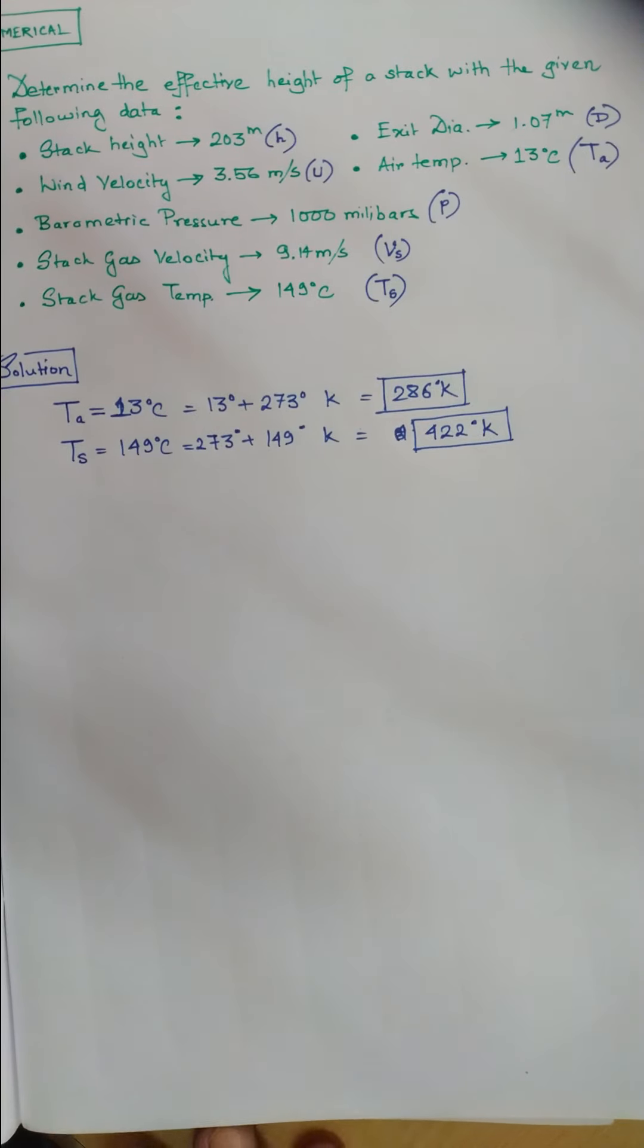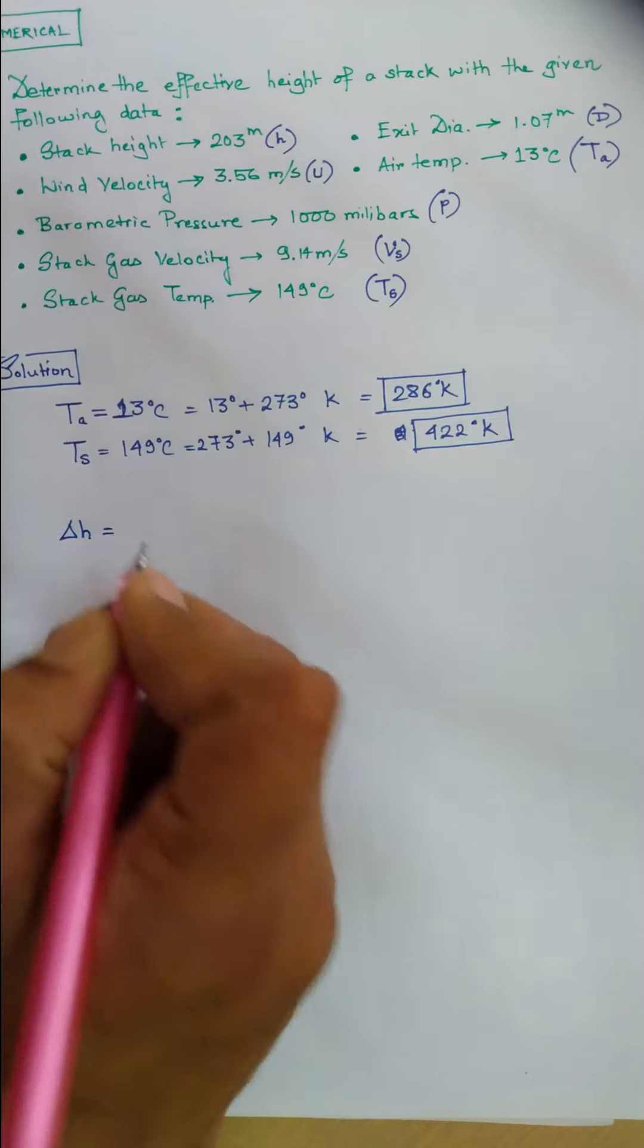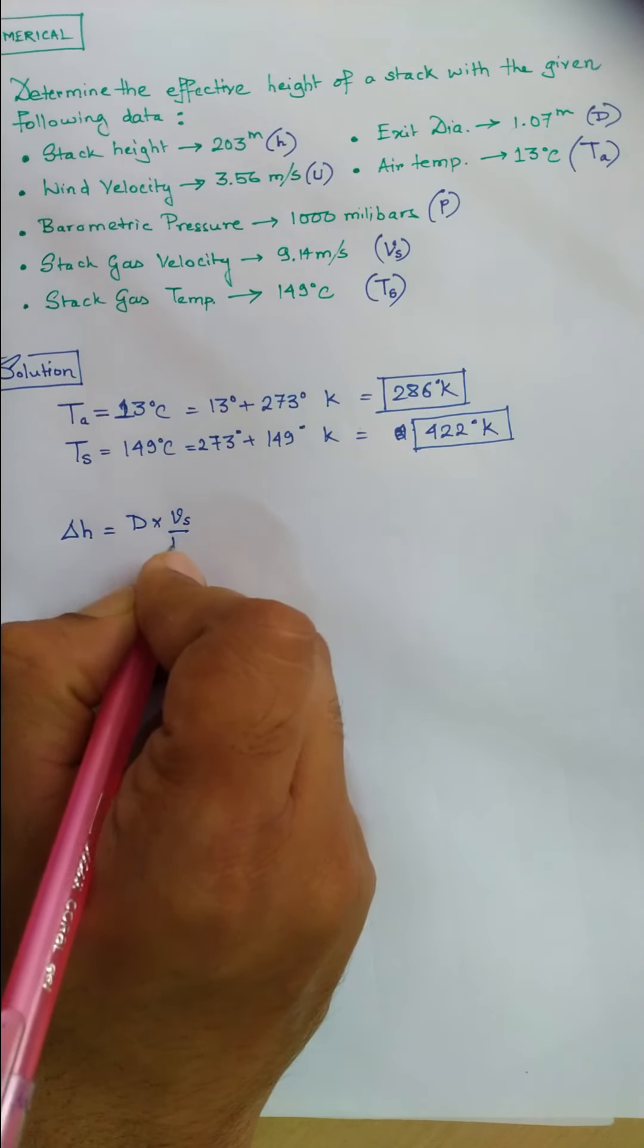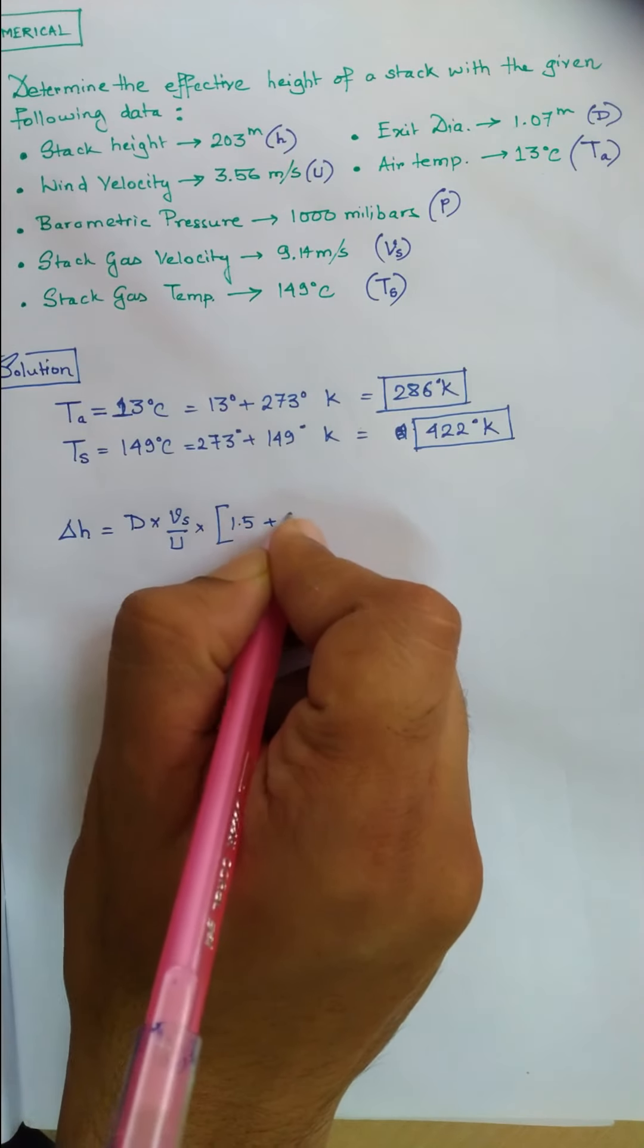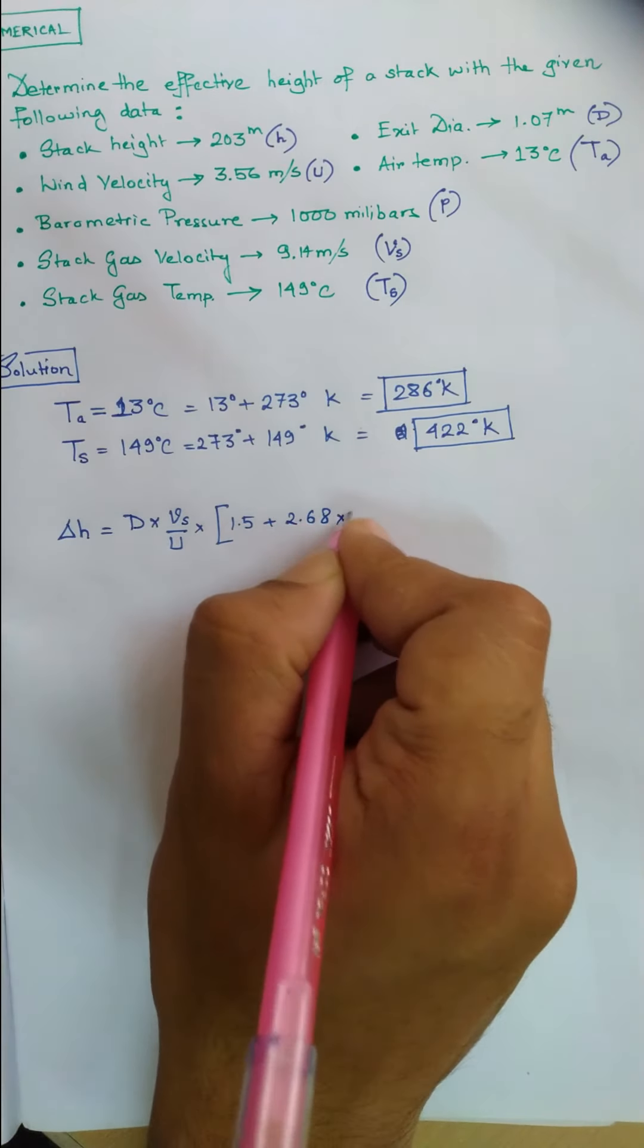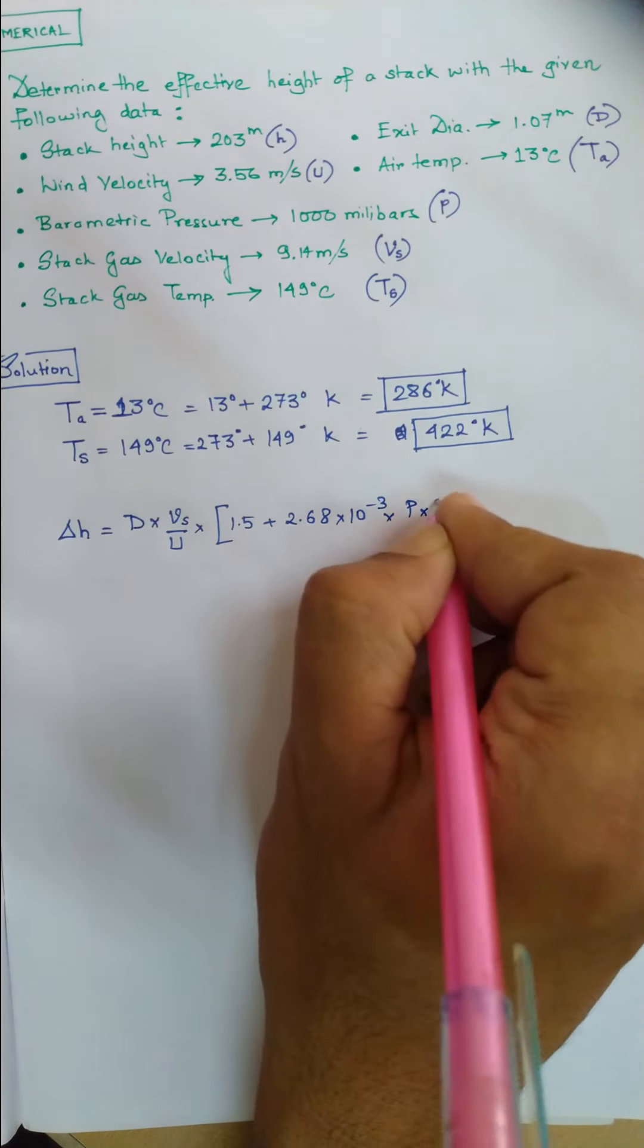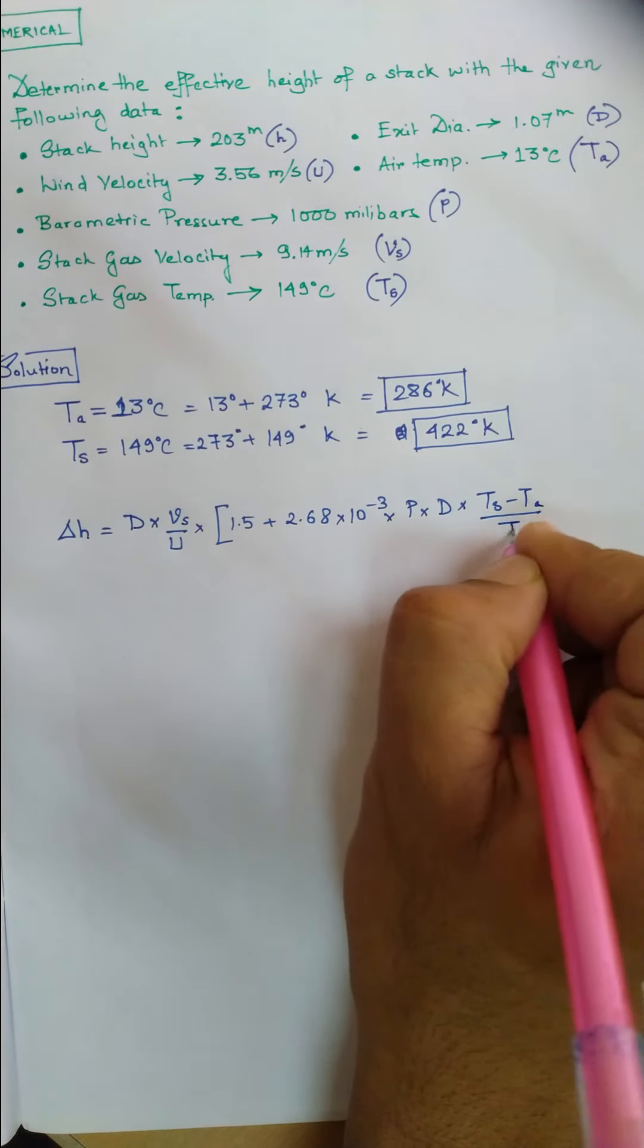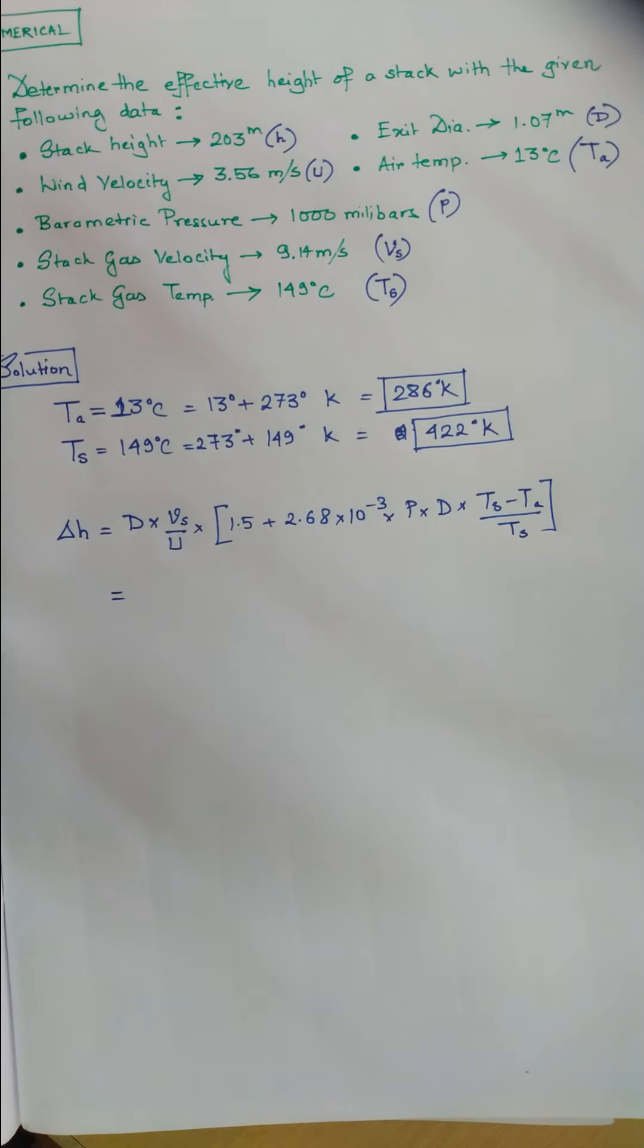What we need to do is put these values in the Holland equation: delta h = d × Vs/u × [1.5 + 2.68 × 10^-3 × p × d × (Ts - Ta)/Ts]. Just put the values in this equation.